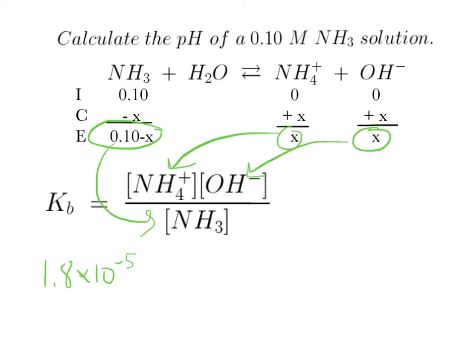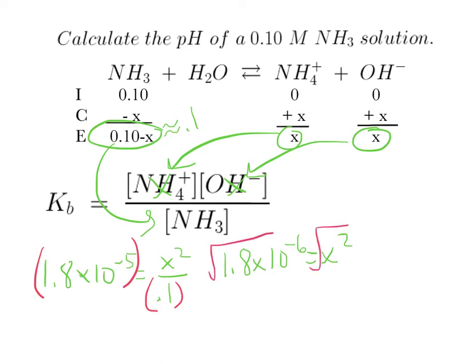Since this is going to be X times X, it'll end up being X squared, and since this is going to be approximately equal to 0.1, we'll have X squared over 0.1. Let's cross multiply and multiply both sides by 0.1, we'll end up with 1.8 times 10 to the negative 6 equals X squared. Then we'll take the square root of both sides, and we'll get X is equal to 1.34 times 10 to the negative 3.